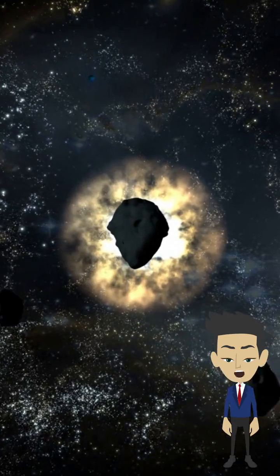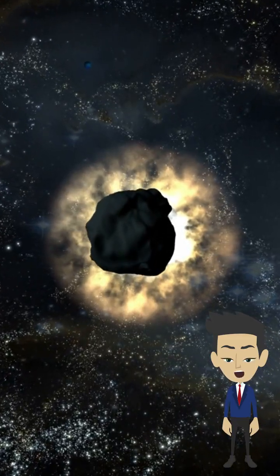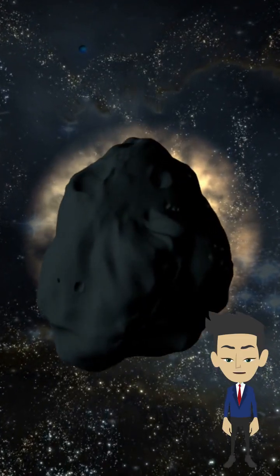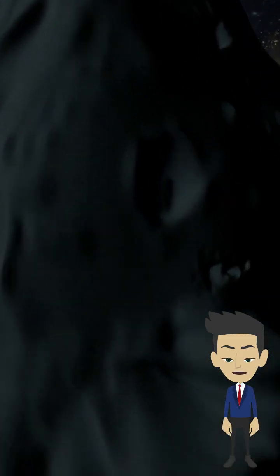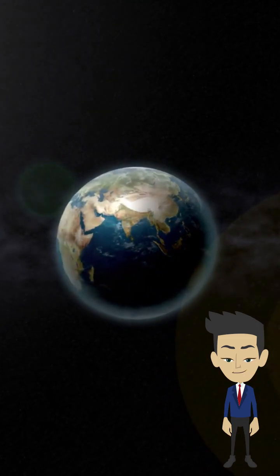On Friday the 13th, April 2029, the asteroid 99942 Apophis will make an incredibly close flyby of Earth. This asteroid, measuring approximately 1,100 feet wide, will pass within roughly 20,000 miles of our planet's surface.